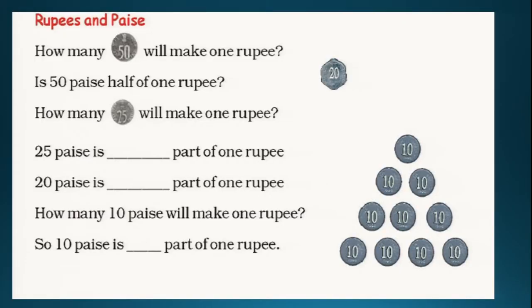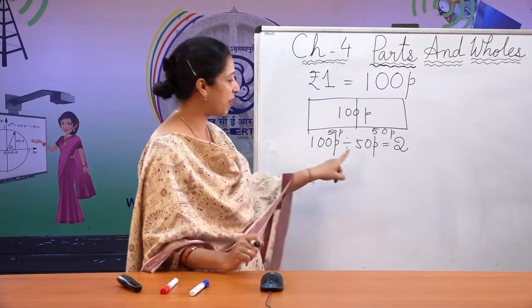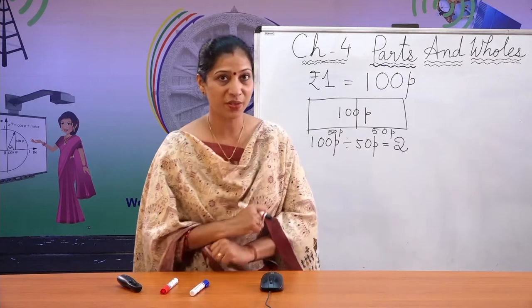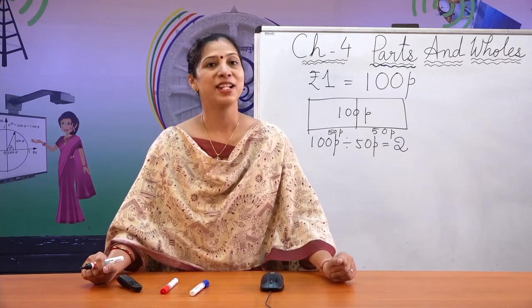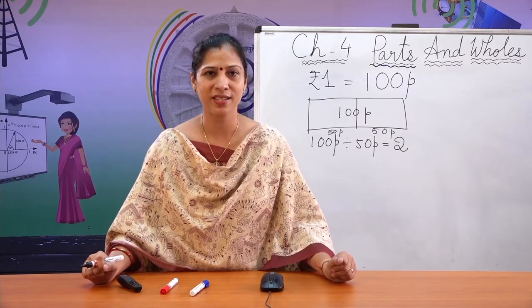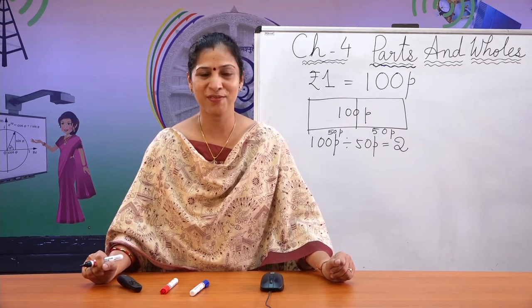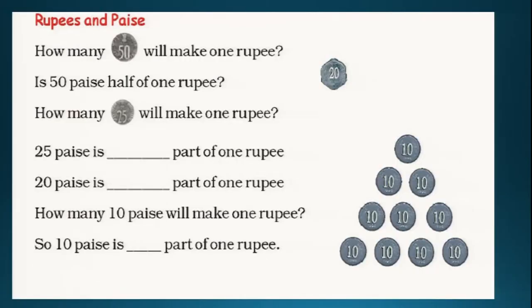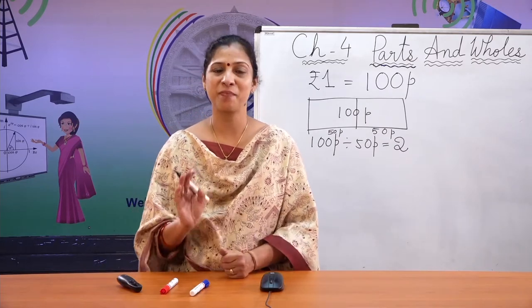How many 20 paise are there in 1 rupee? Divide 100 paise by 20 paise. Do you remember the table of 20? The answer is 5. So there are five 20 paise coins in 1 rupee. Similarly, 100 divided by 10 equals 10, so there are ten 10 paise coins in 1 rupee.